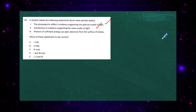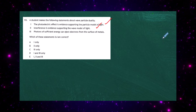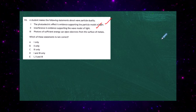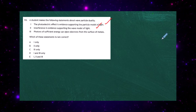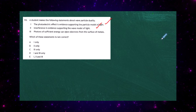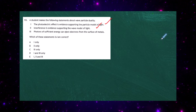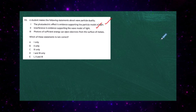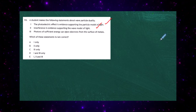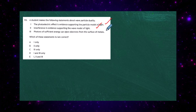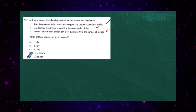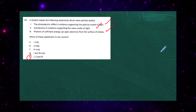The third statement — photons of sufficient energy can eject electrons from the surface of a metal — is also true. Those photons must have sufficient energy to overcome the work function of that particular metal. With all three statements true, the answer to question 13 is E.